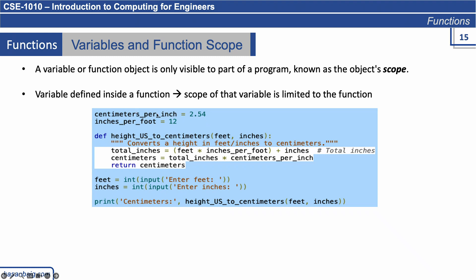In this example, we have a program where centimeters_per_inch is a variable with the value 2.54, and inches_per_foot equals 12. Then we have a function definition. The name of the function is height_us2centimeters. Inside we have variables: feet equals this and inches equals this. We are calling this function — this is an example of a nested function call.